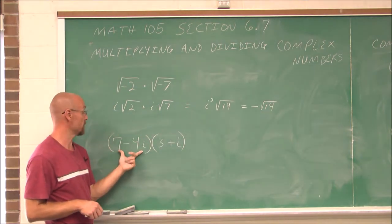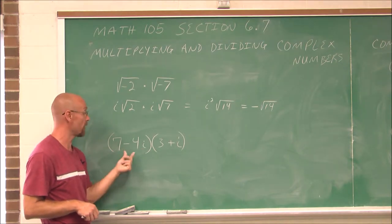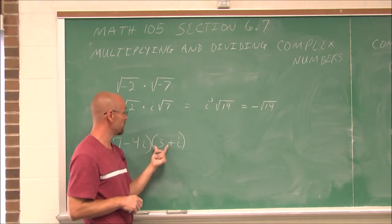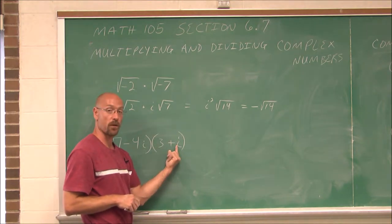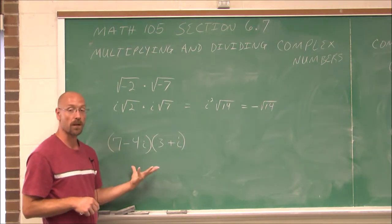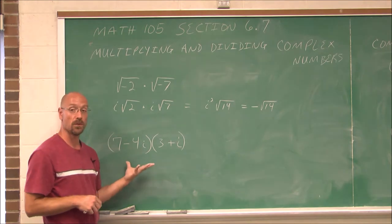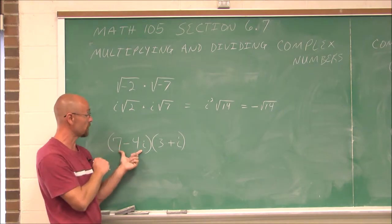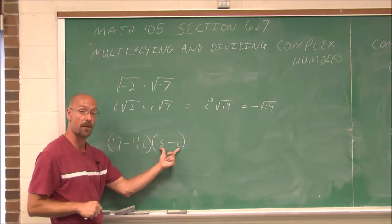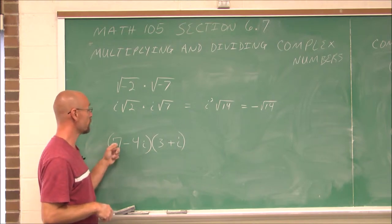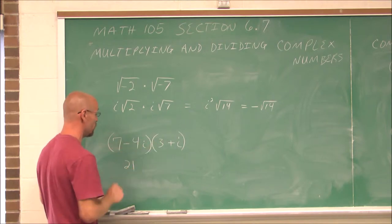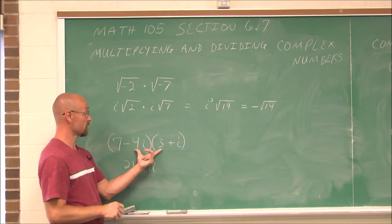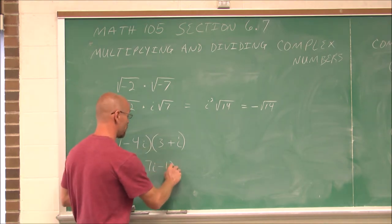Now, what if we have an imaginary number such as (7 − 4i), where 7 is the real part and −4 is the coefficient of i, multiplied by (3 + i), which has real part 3 and imaginary coefficient 1? When multiplying imaginary numbers, we can use FOIL, treating each expression as a binomial. The first term: 7 times 3 is 21. The outer term: 7 times i is 7i. The inner term: negative 4i times 3 is negative 12i.